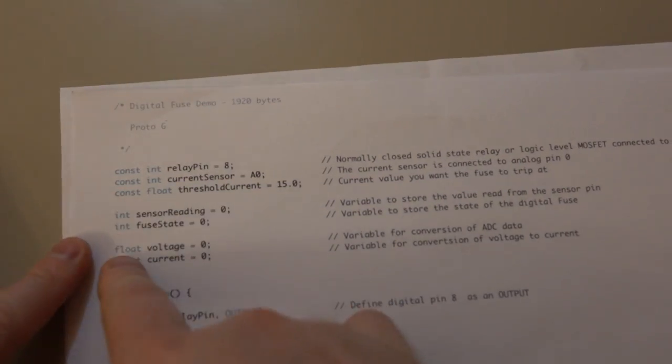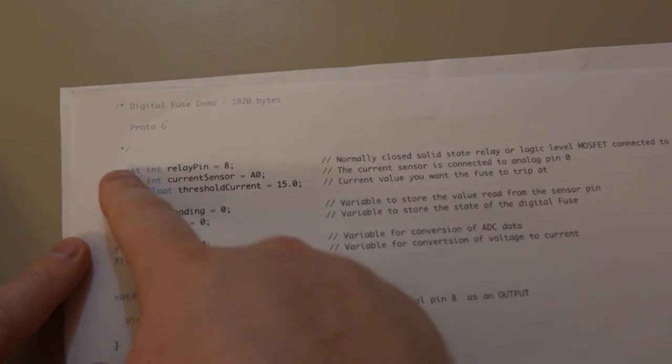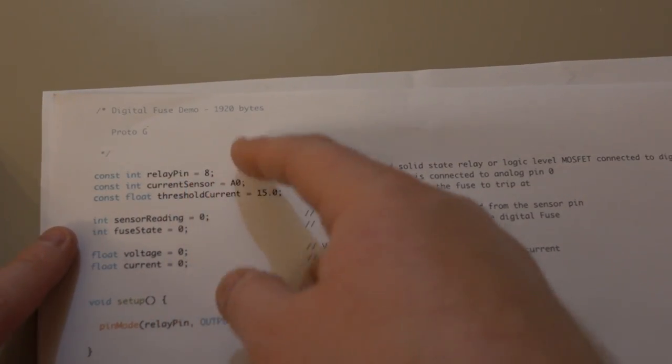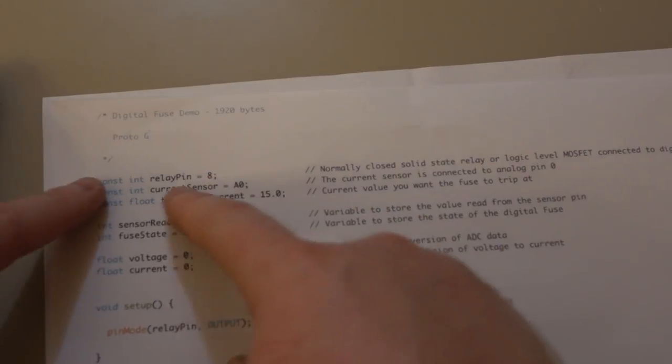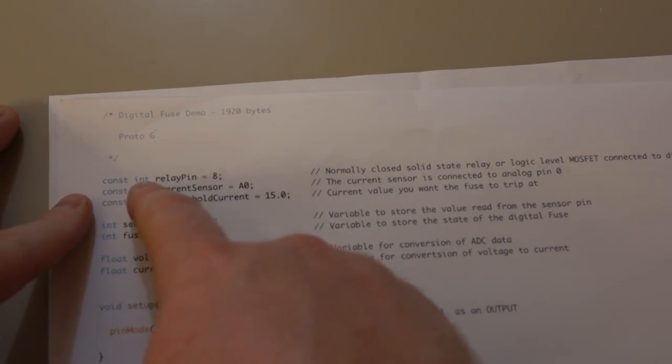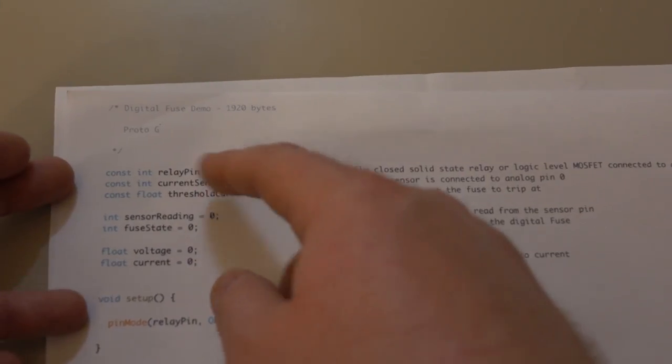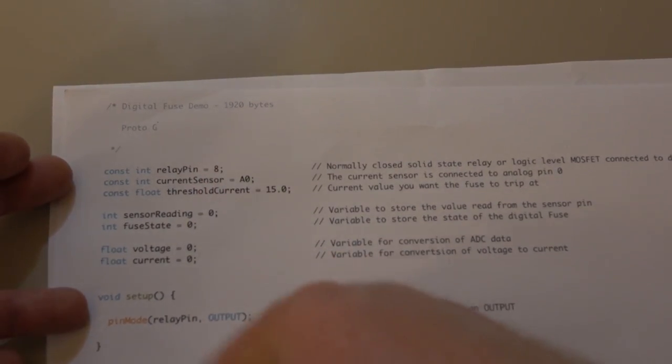You notice on the side here we have some different data types. Constant is a constant integer, and basically that just is going to protect you against yourself. If you remember to declare it as a constant integer when it is a value you know that shouldn't change, if you were to accidentally change it in your program, it will give you a warning and you won't be able to compile the code.